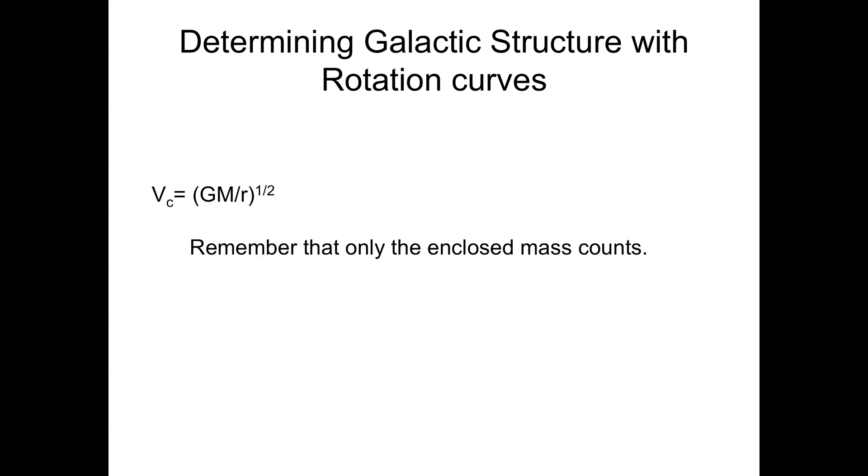Another important subject is the determination of rotation, of galactic structure with rotation curves. We want to understand how our own galaxy is put together. And we do this by using the relationship between velocity, distance, and mass. The 1 over r squared law, the Keplerian law, which we use in our own solar system for knowing the velocities of planets orbiting the sun. Remember, in this case, it's only the mass enclosed within your orbit that counts, not the mass outside.